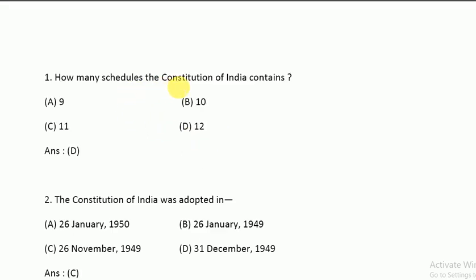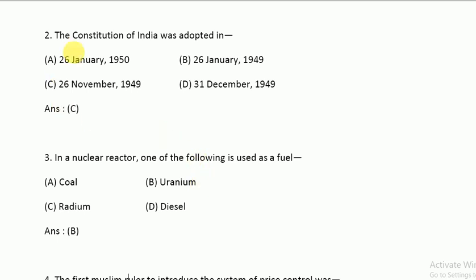How many schedules does the Constitution of India contain? The Constitution of India contains 12 schedules. The Constitution of India was adopted on 26 November 1949.